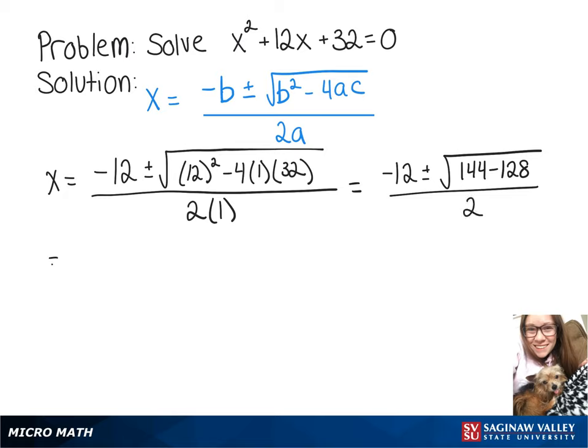Simplifying it further, we get negative 12 plus or minus the square root of 16 over 2, and then negative 12 plus or minus 4 over 2.